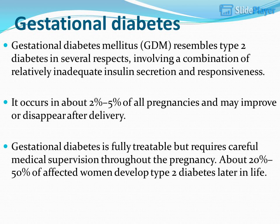Gestational diabetes mellitus (GDM) resembles type 2 diabetes in several respects, involving a combination of relatively inadequate insulin secretion and responsiveness. It occurs in about 2% to 5% of all pregnancies and may improve or disappear after delivery. Gestational diabetes is fully treatable but requires careful medical supervision throughout the pregnancy. About 20% to 50% of affected women develop type 2 diabetes later in life.